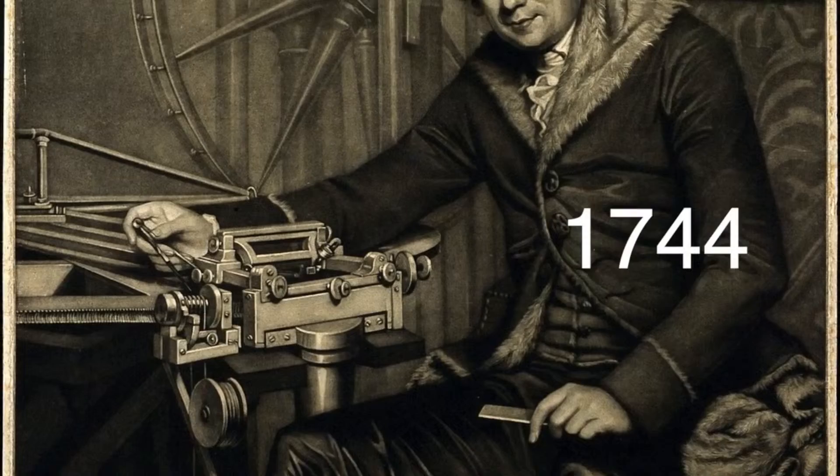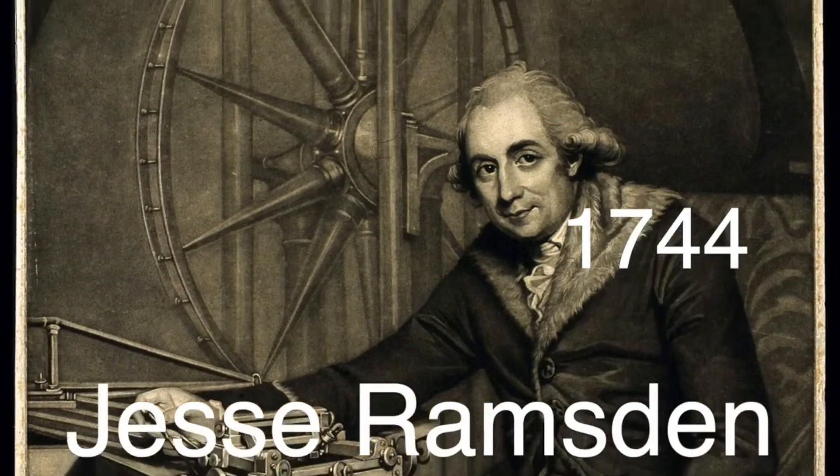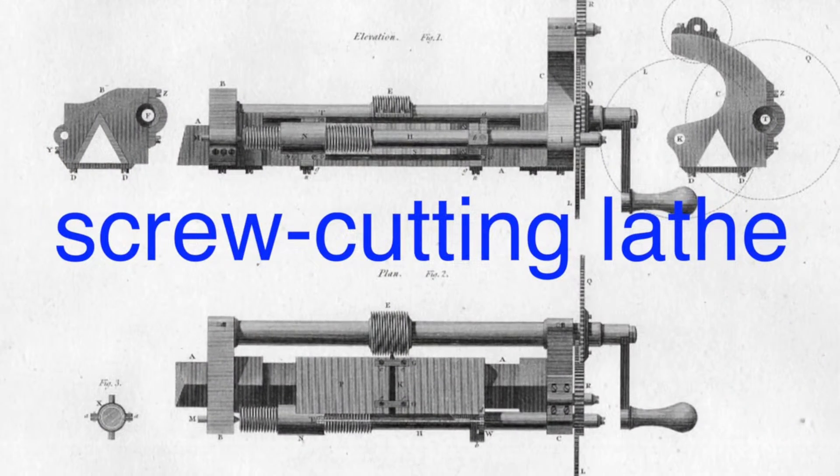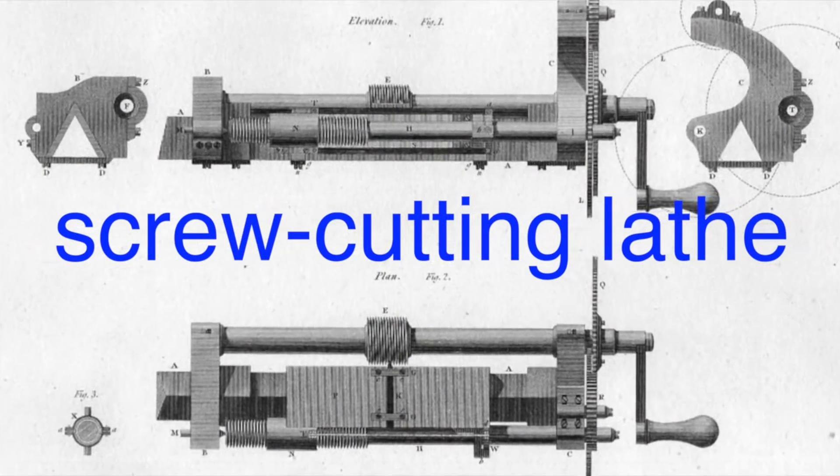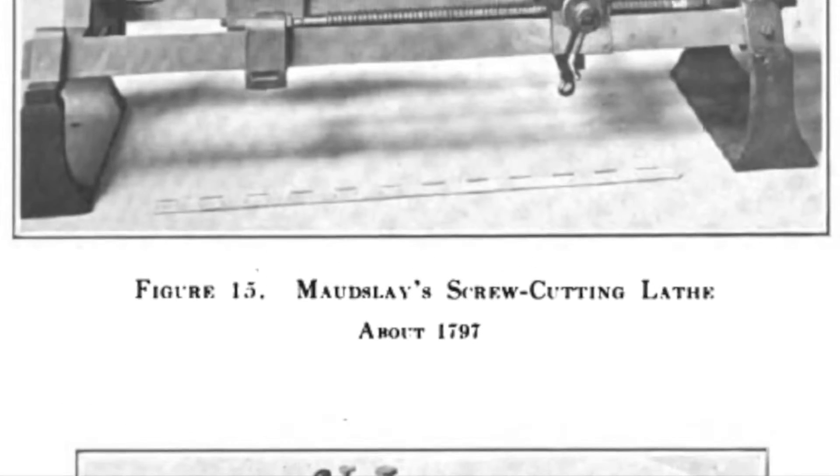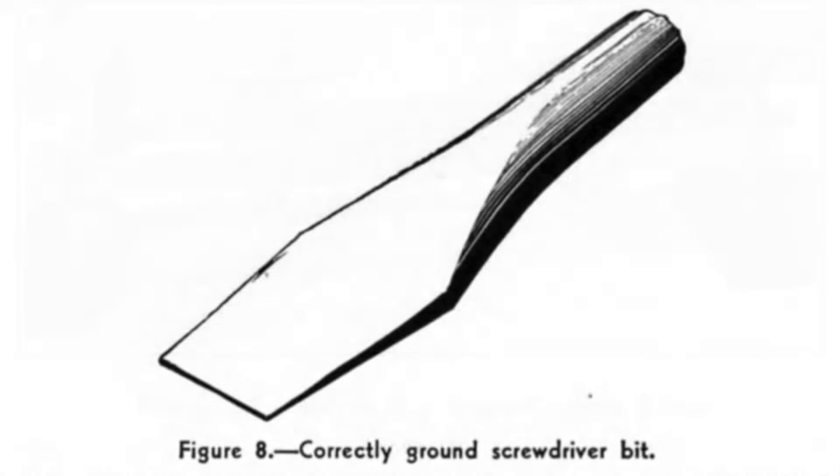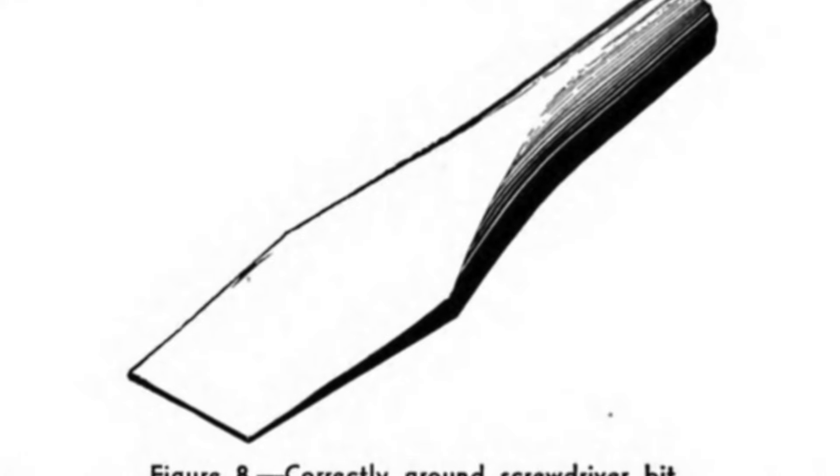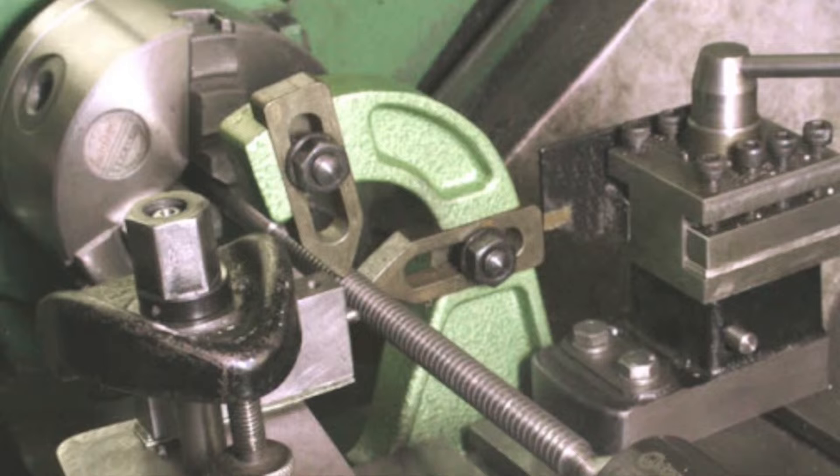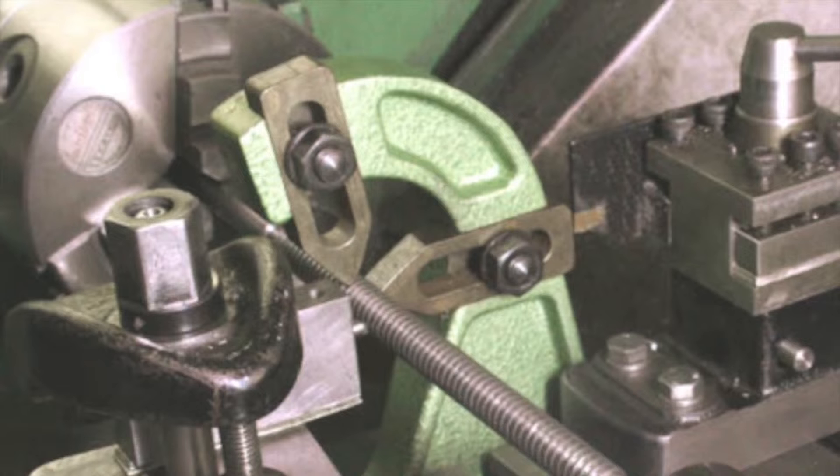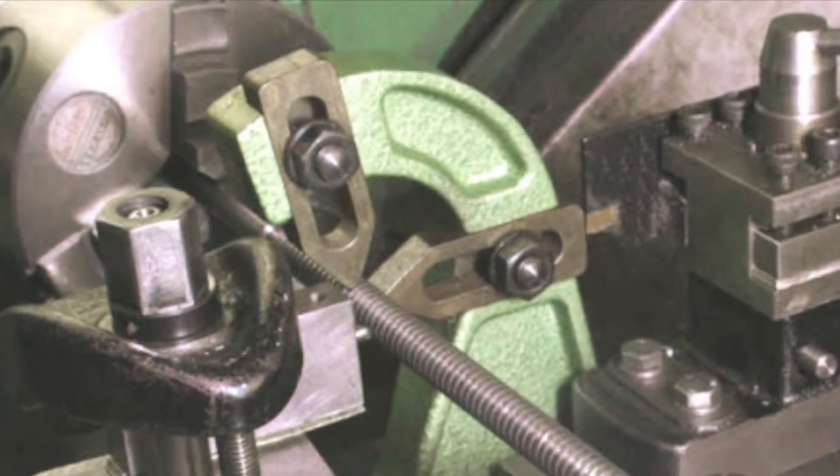In 1744, English instrument maker and engineer Jesse Ramsden invented a screw cutting lathe which allowed for the mass production of screws with consistent threads. This invention was pivotal as it enabled the widespread use of screws in various applications from machinery to furniture. Consequently, the flathead screwdriver became an essential tool in both industrial and domestic settings. The precision and uniformity of Ramsden's screws necessitated a tool that could fit perfectly into the screw slot, driving it with efficiency and minimal damage. Thus, the flathead screwdriver, as we know it, began to take shape.